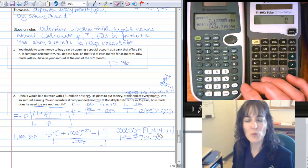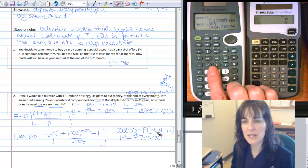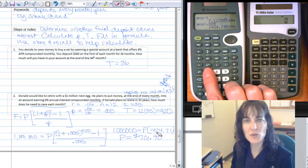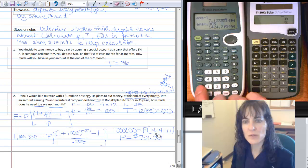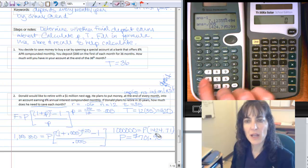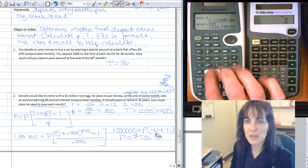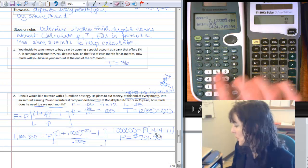And then remember you can either do the 1 over, which in this case, the inverse button is the x to the negative 1, so I can punch that in, or I can use the store button right here and store that in my calculator. So I'm going to, maybe I'll do both.